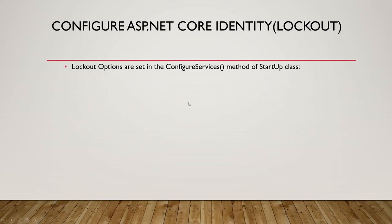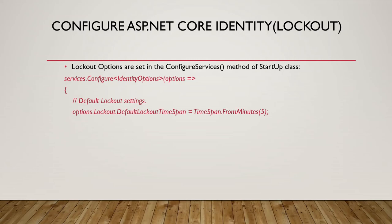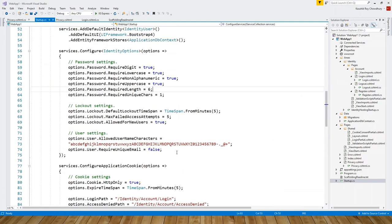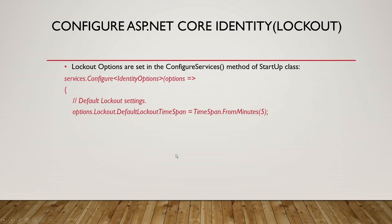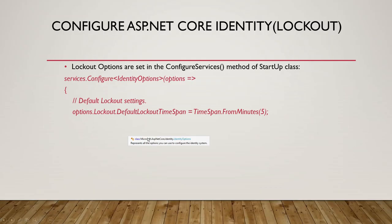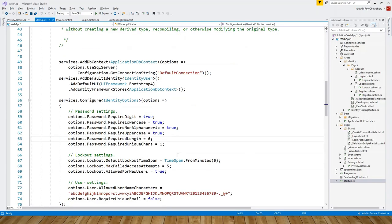Lockout options are set in the ConfigureServices method of the Startup class. I'll tally the code on the slide with the Visual Studio solution already created. In the Startup class, services.Configure takes an IdentityOptions object and a lambda operator — services.Configure — and these are the default lockout settings.